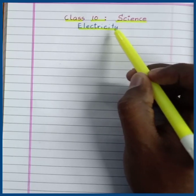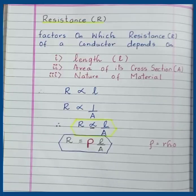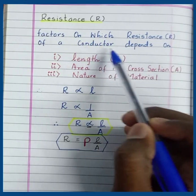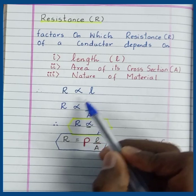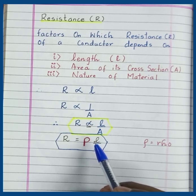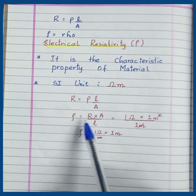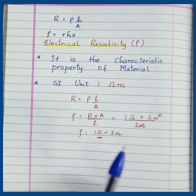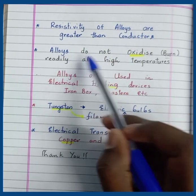Dear students, welcome back to the online class. We are learning the unit Electricity. In the last video we learned about factors on which resistance of a conductor depends: length, area of cross-section, and nature of material. That is, R is directly proportional to L and inversely proportional to its area of cross-section. R equals rho times L divided by A, where rho is the characteristic property of the material. Its SI unit is ohm-meter, and rho equals R times A divided by L.